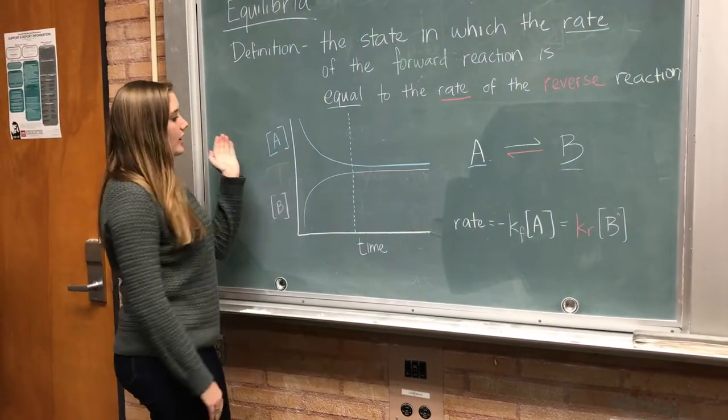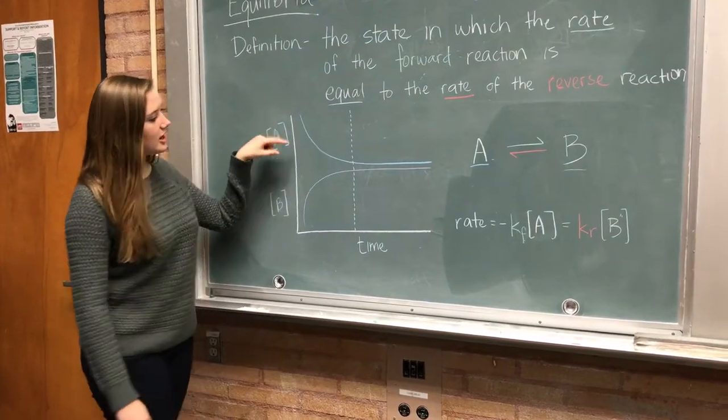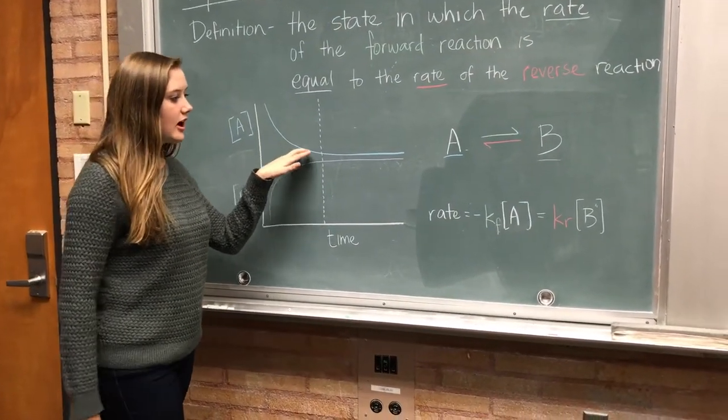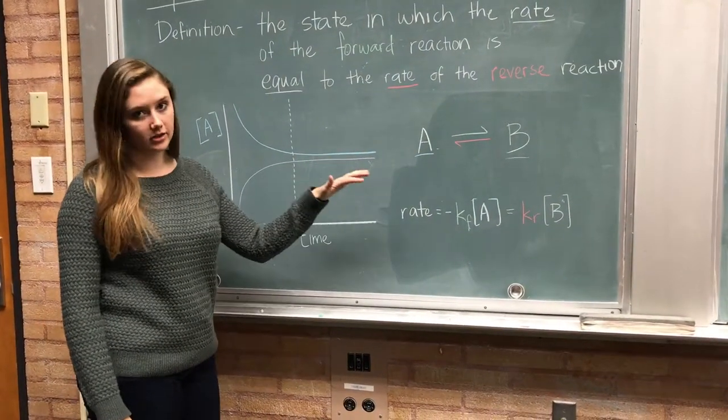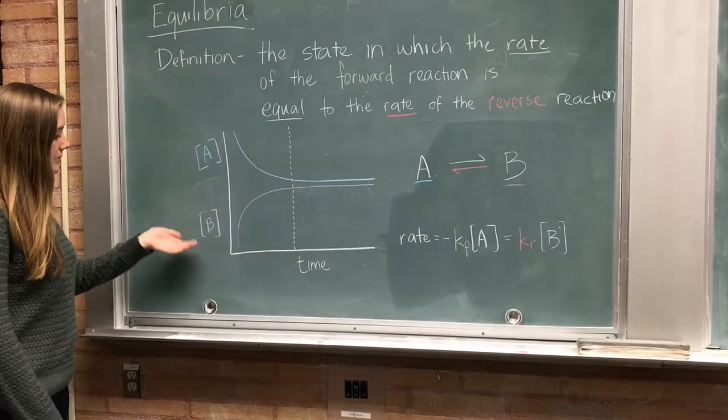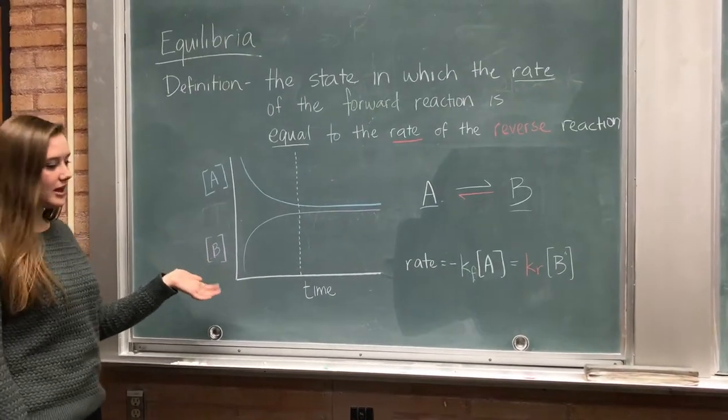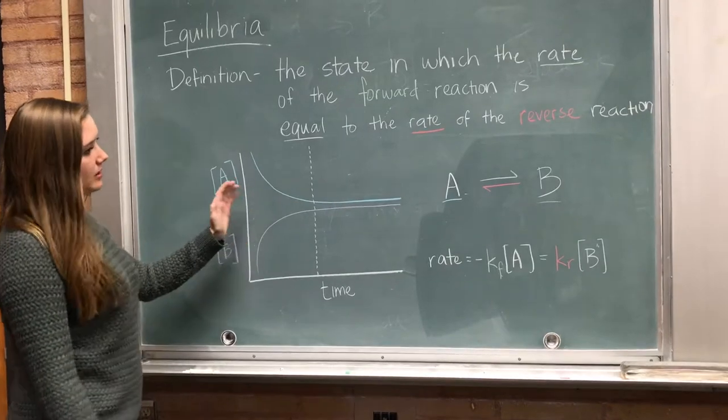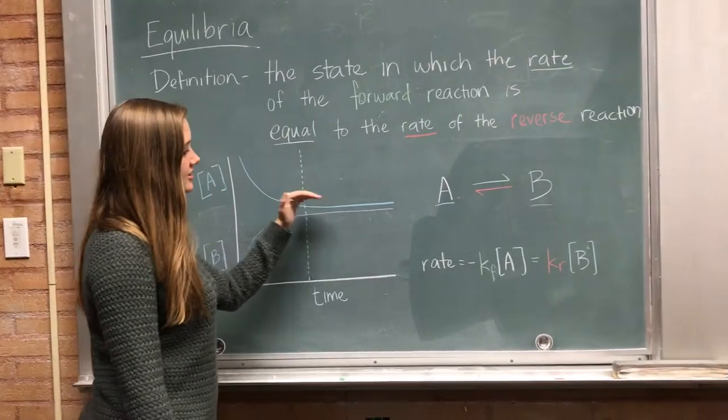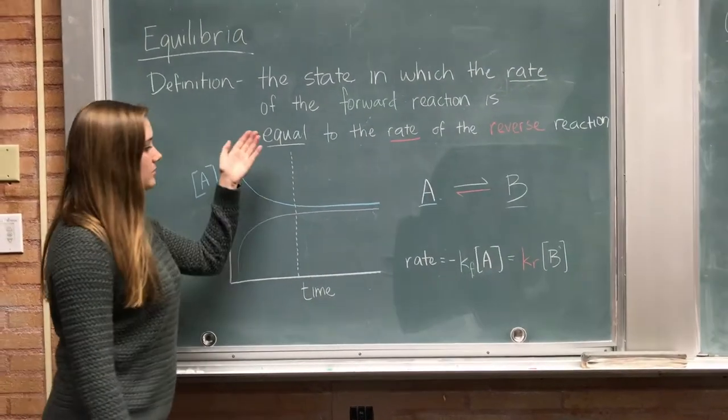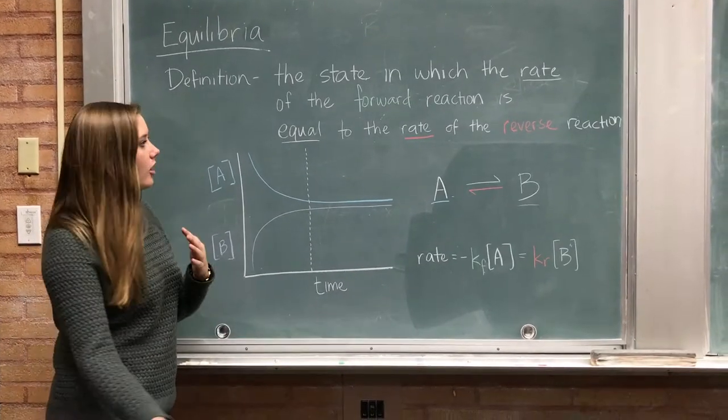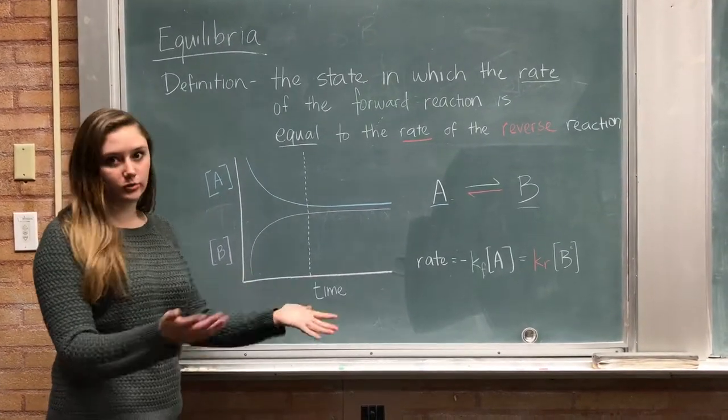Over time, we have our reactant A being used up, and we see that it normally hits a very constant steady amount of concentration. However, our B, our product being made, also increases in amount since we're making it, and also hits this steady level. So this steady level is what we call our equilibrium. So our concentrations are no longer really changing.